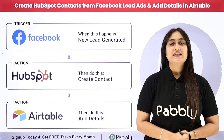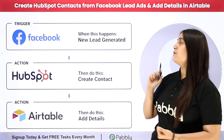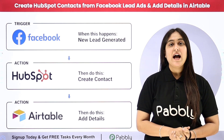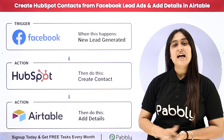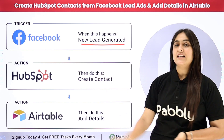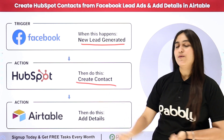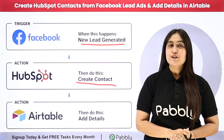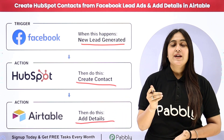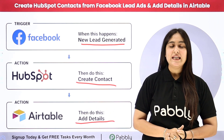Hello everyone, welcome back to Pabbly. In this video we are going to learn how to create HubSpot contacts from Facebook lead ads and add details in Airtable. I run an architecture firm and to promote my firm I am running some Facebook lead ads. Whenever I receive a new lead through my Facebook lead ad, automatically a new contact should be created in my HubSpot account, and that lead detail should be added in my Airtable account. To build this connection, I need to connect these applications using an automation software named Pabbly Connect.